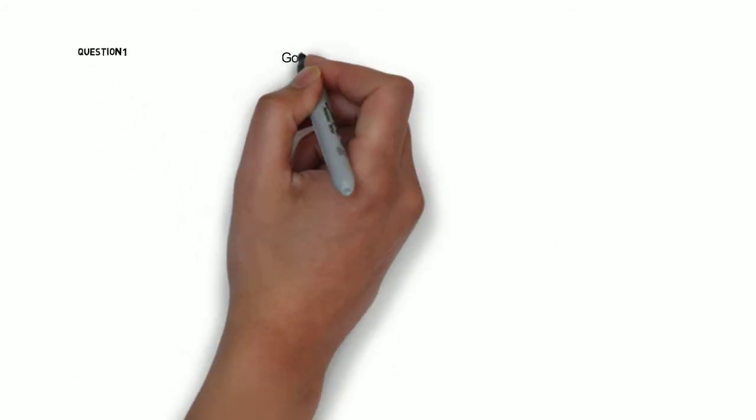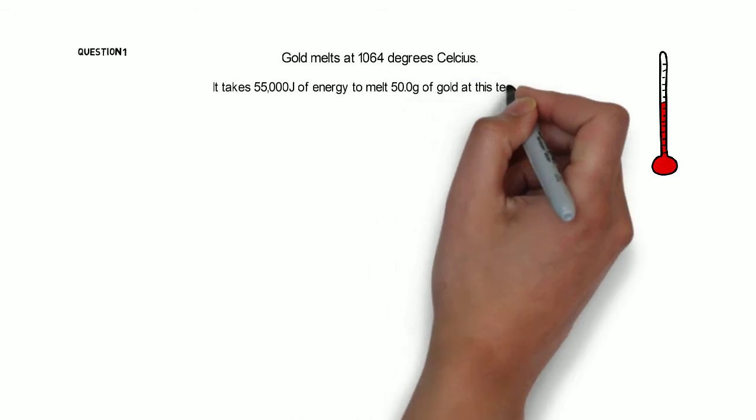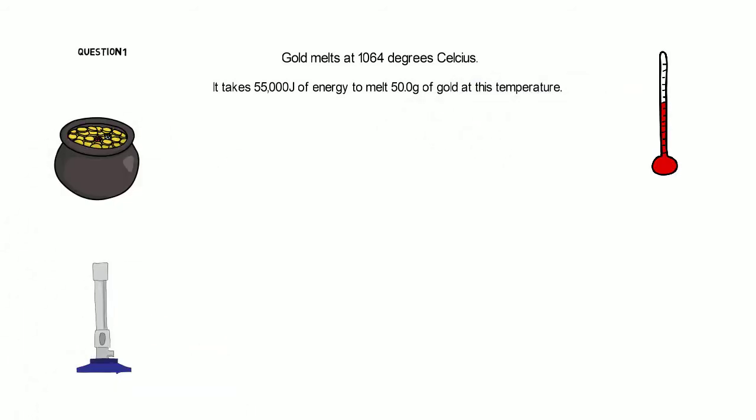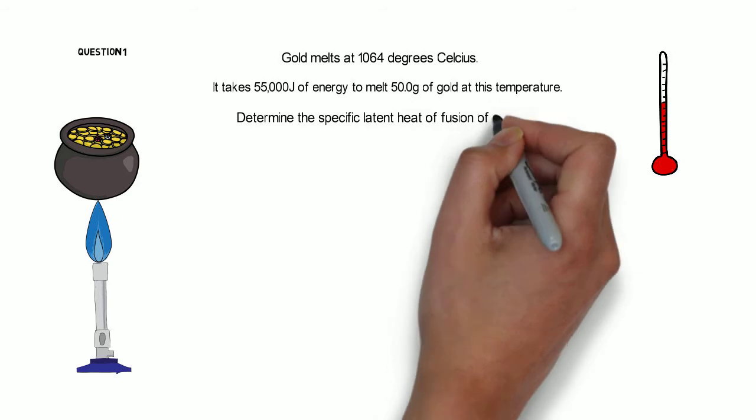This is Unit 3, Lesson 5, Latent Heat. Question 1: Gold melts at 1,064 degrees Celsius. It takes 5.5 × 10^4 joules of energy to melt 50 grams of gold at this temperature. Determine the specific latent heat of fusion of gold.